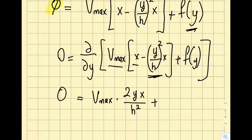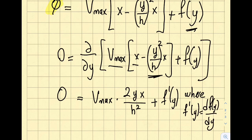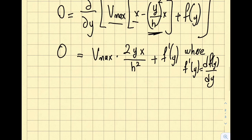Where f prime of y equals df/dy. So from here, if you see, I'm going to get myself f prime of y. Actually, I have a negative here, so f prime of y will be equal to V max 2yx over h squared.